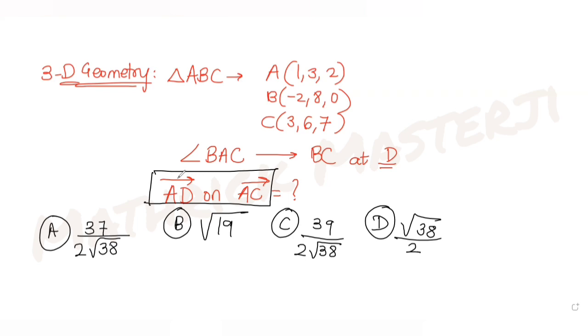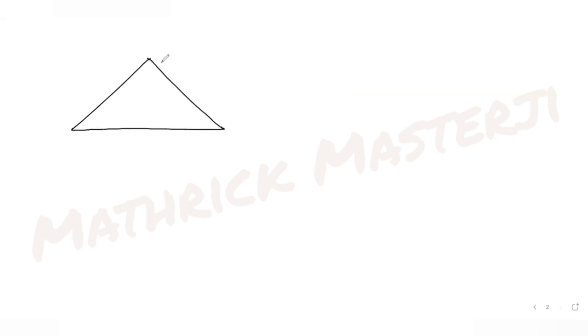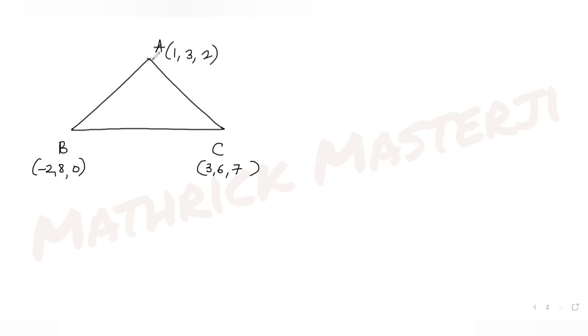We have been given three coordinates A, B, and C. The angle bisector of angle BAC meets line BC at point D. If I draw the triangle with vertices A(1,3,2), B(-2,8,0), and C(3,6,7), the angle bisector from A divides BC at point D. By the angle bisector theorem, D divides BC in the ratio AB:AC, which works out to 1:1 here.